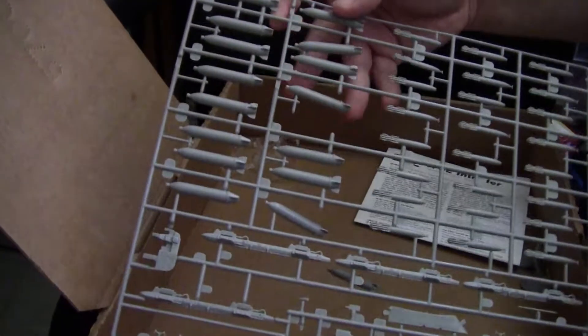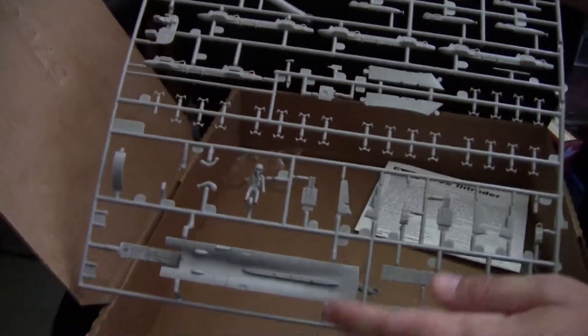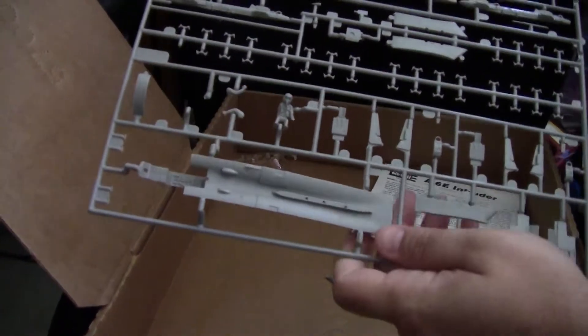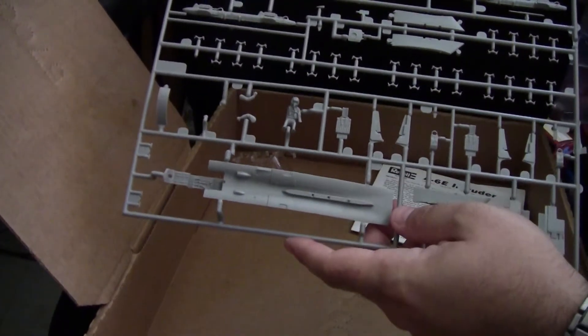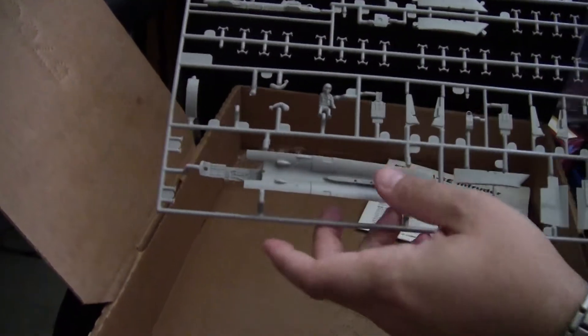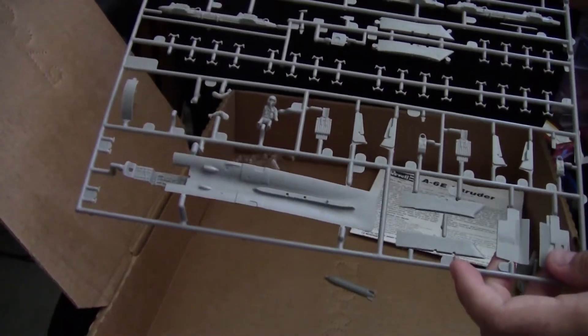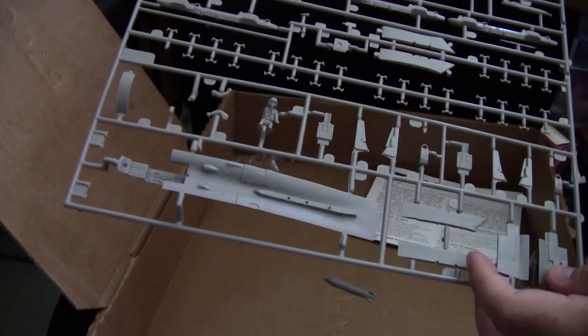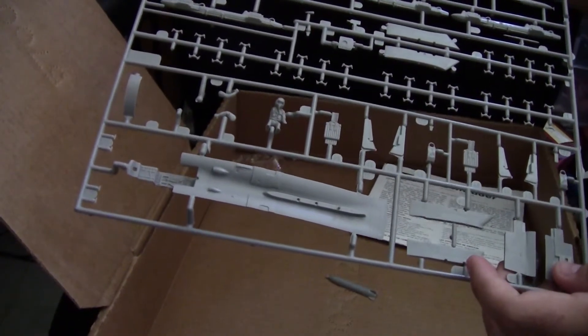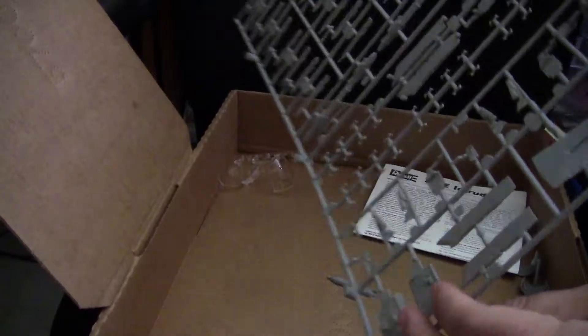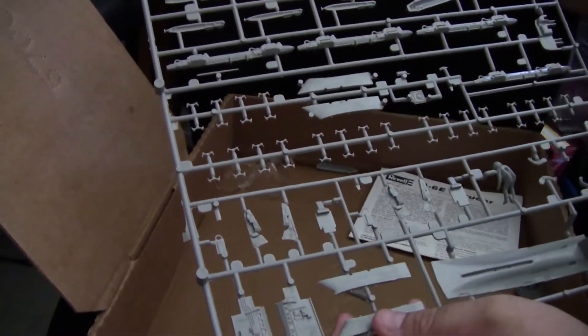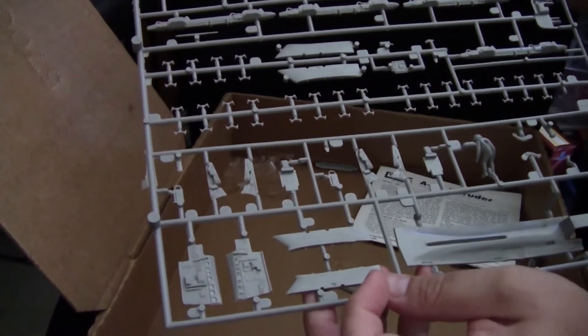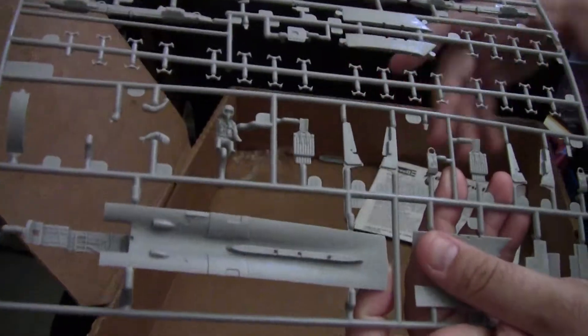Now, next sprue, we have basically all of our weapons, but we also have this one center part for the underside, which has our mount for the centerline tank, as well as our nose gear bay. This is one of the oddest design choices I've ever seen on a kit. Just something I've never seen, to be honest. The detail is good, as you can see here on the sides of the gear bay, but beyond that, it's just an odd choice.